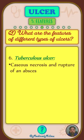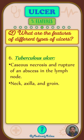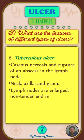Tuberculous ulcers occur after caseous necrosis and rupture of an abscess in the lymph node. The neck, axilla, and groin are the commonly affected parts. The lymph nodes are enlarged, non-tender, and matted.